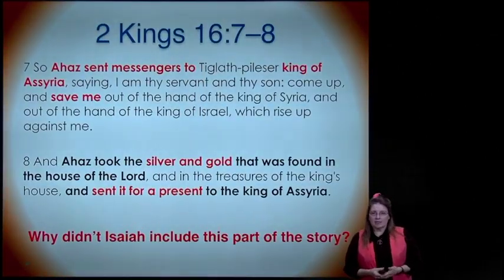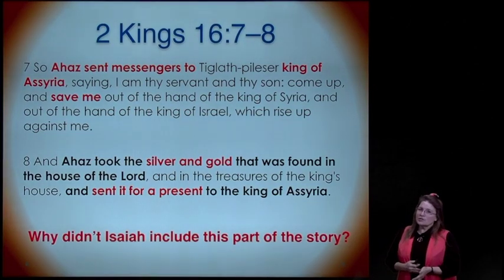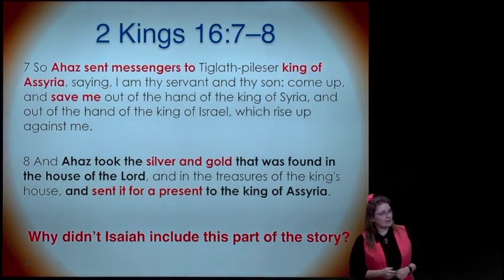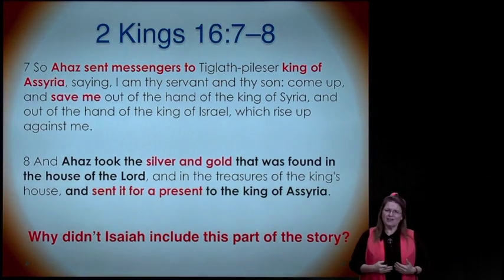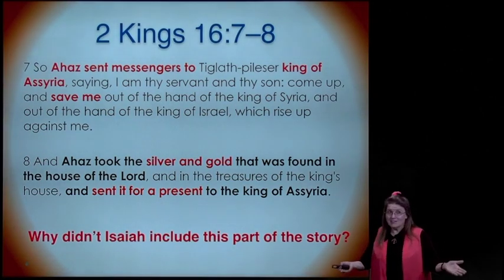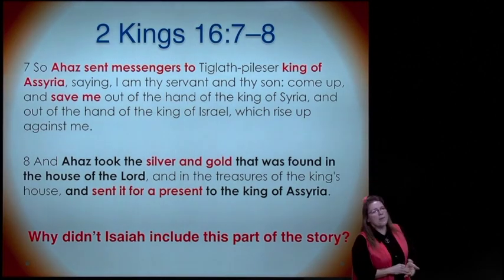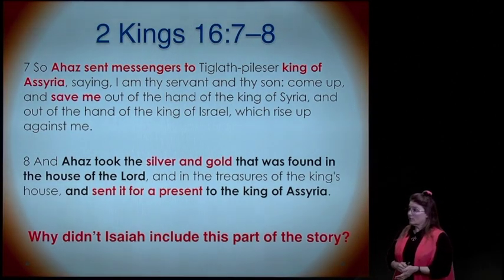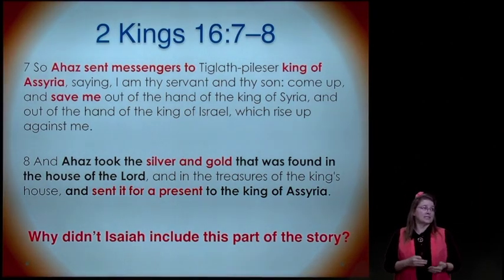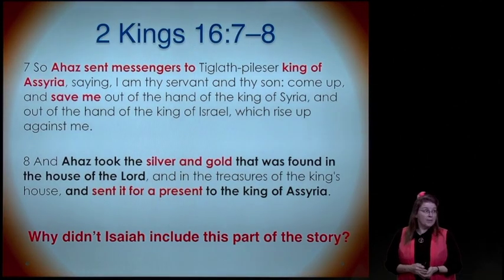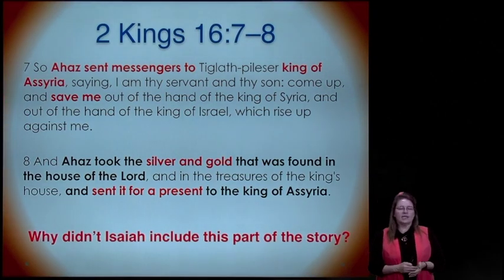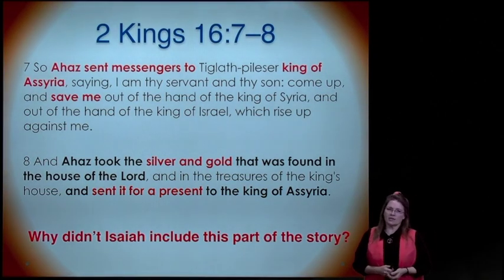Let's take a look at another scripture in 2 Kings about Ahaz. Ahaz sent messengers to the king of Assyria saying, 'I am thy servant and thy son. Come up and save me out of the hand of the king of Syria and out of the hand of the king of Israel'—because they in the north were in a coup to take out King Ahaz and replace him on the throne with a puppet king. So Ahaz, instead of trusting in God, was going to hedge his bet by making an alliance with the king of Assyria.